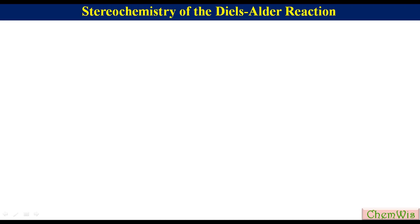Hello friends. Today we are going to discuss the stereochemistry of the Diels-Alder reaction. We will first discuss the stereochemistry of the dienophile part, and then exo- and endo-product formation and endo-selectivity.